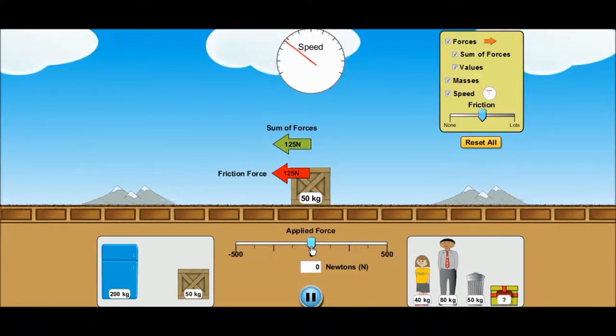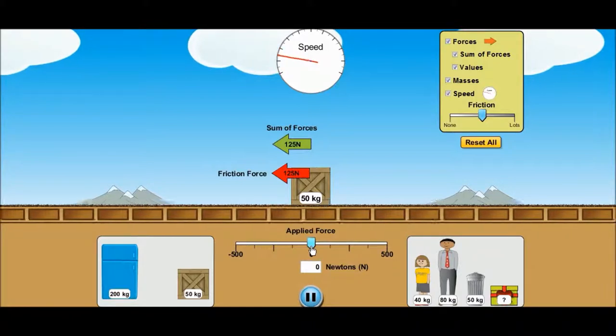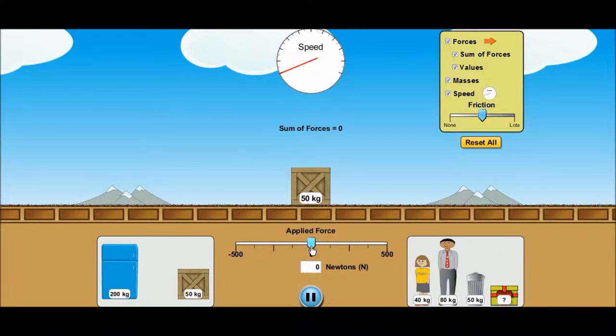So what happens if we suddenly put that back to zero? The box carries on. It doesn't carry on forever. Why? Because the forces are unbalanced in the opposite direction. In order to change something's motion, you have to unbalance the forces.